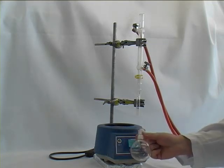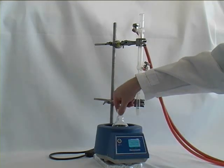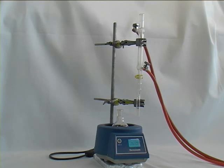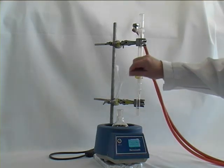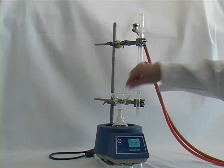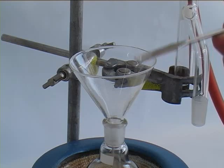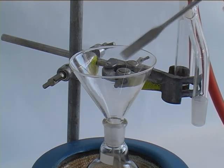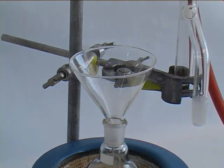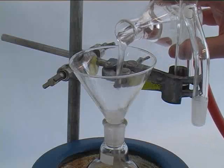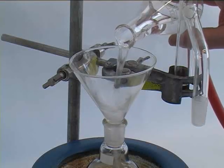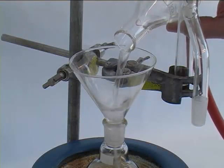What we have here is our round-bottom flask, where we have our solution. In order to add the solution, we will use a funnel. Then we add roughly that amount of anti-bumping granules, which helps the solution to reflux nicely without bumping too much. And finally we add our reaction mixture to the round-bottom flask.